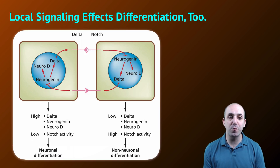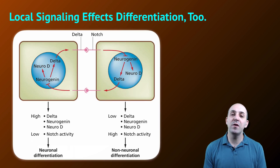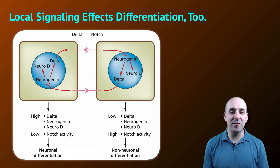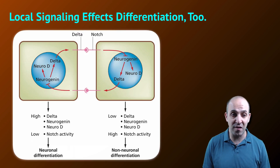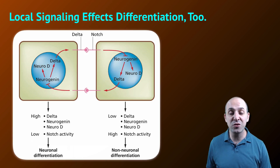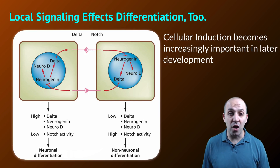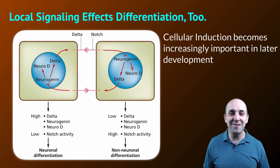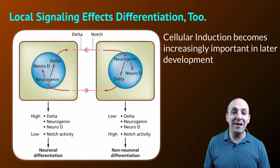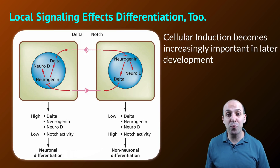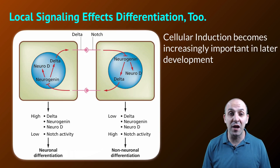This diagram shows the interchange between two different molecules called Delta and Notch in two neighboring cells in a developing organism. The cell on the left has high concentrations of the Delta molecule, which is leading it down a differentiation pathway into a neuron. The expression of Delta on its surface interacts with the Notch protein in the cell on the right, causing that cell to decrease the amount of Delta it expresses and thus not differentiate into a neuron. This is what's referred to as cellular induction, and it becomes increasingly important as the embryo develops because positional information from initial concentration gradients is no longer sufficient as the number of cells and diversity of cell types increases.